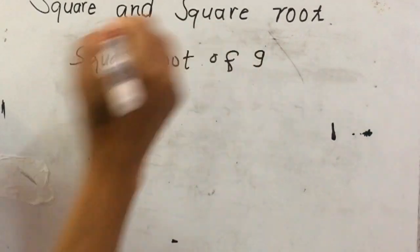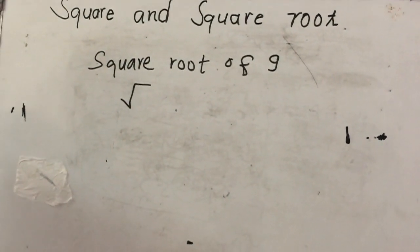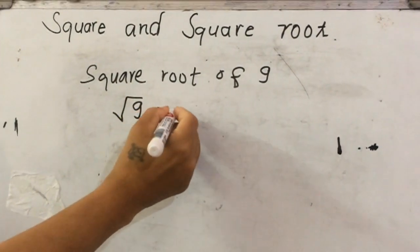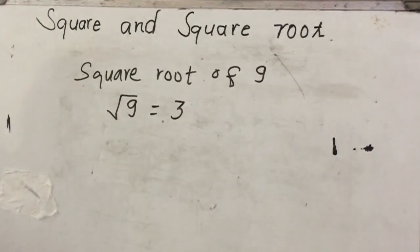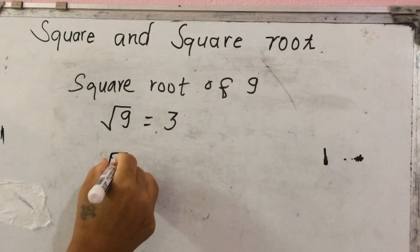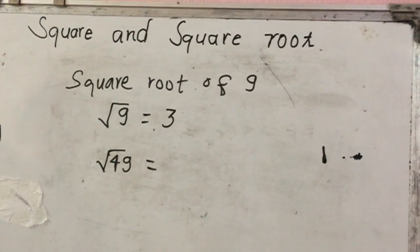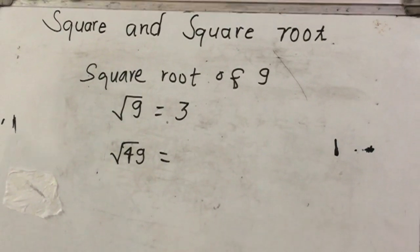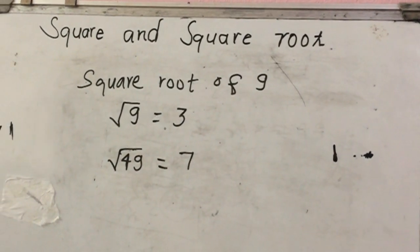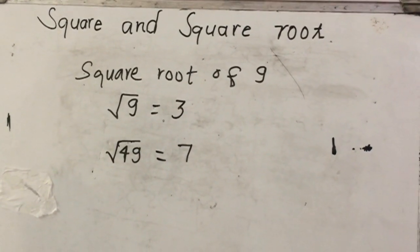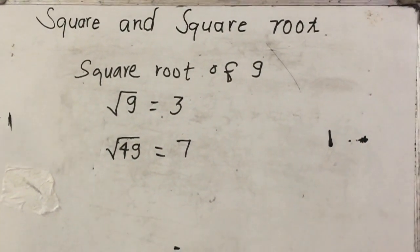The square root uses this symbol, which is called the radical sign. The square root of 9 is 3, because 3 times 3 gives us 9. For the square root of 49, we look for a number multiplied by itself to get 49: 1×1=1, 2×2=4, 3×3=9, 4×4=16, 5×5=25, 6×6=36, and 7×7=49. So 7 is the square root of 49.